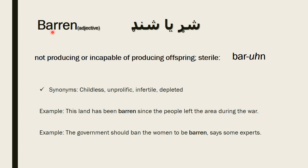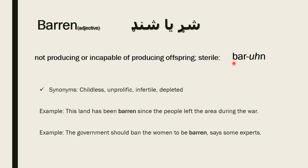Let's jump to the second word: barren. Barren is an adjective according to functionality. The English meaning of barren is not producing or incapable of producing offspring — that is, sterile. The pronunciation is 'barren.'